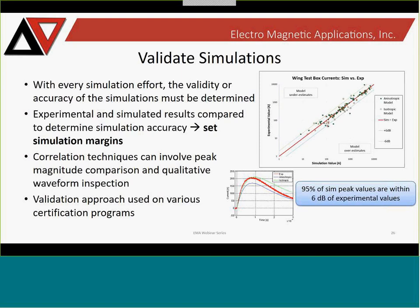This type of validation has been published recently for various aircraft certification programs. We have found extraordinary correlation between experiment and simulation — 95% of our simulation peak values were within 6 dB of experimental results. In terms of currents and voltages, 6 dB is a factor of 2. More than 80% of our correlation results were within 3 dB. Through a large range of amplitudes from 10 amps up through 10 milliamps, there is very tight correlation between simulation and experimental results, found applicable on multiple vehicles in multiple environments.